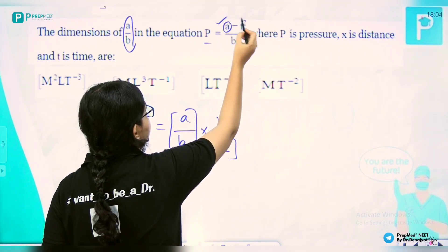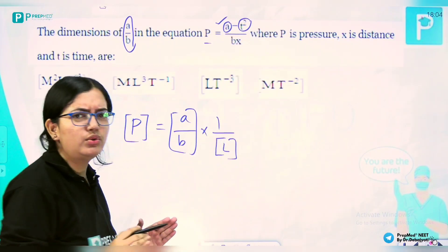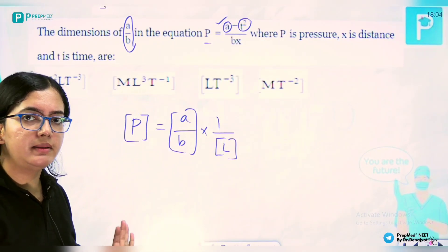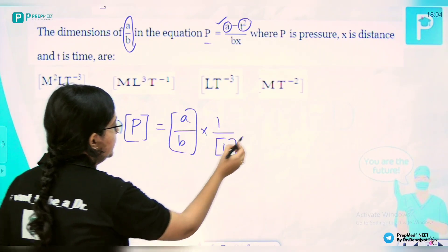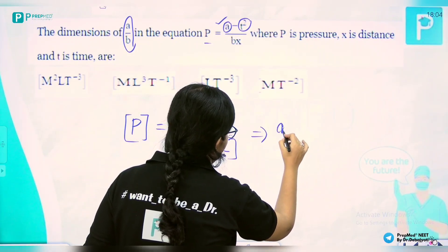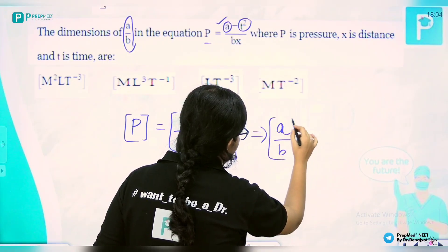a has the dimension of t², but we don't need to calculate that separately because we want a/b. So directly write a/b, and we get a/b equals